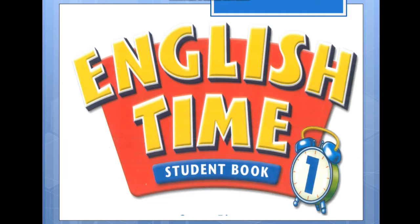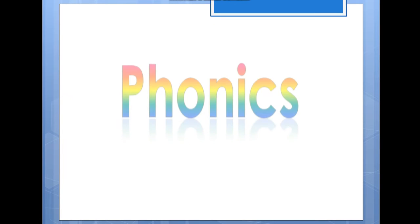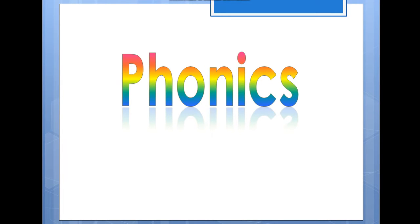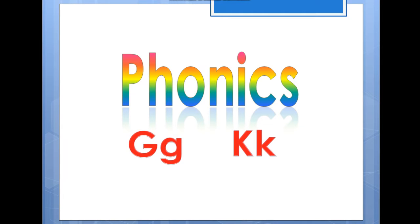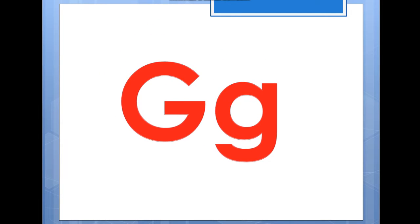Hello everyone, welcome to English Time One with Phonics. Let's learn the sound of letter G and K. Now let's pronounce the sound of letter G: good, good. Again: good, good. After you pronounce, now we repeat the words.